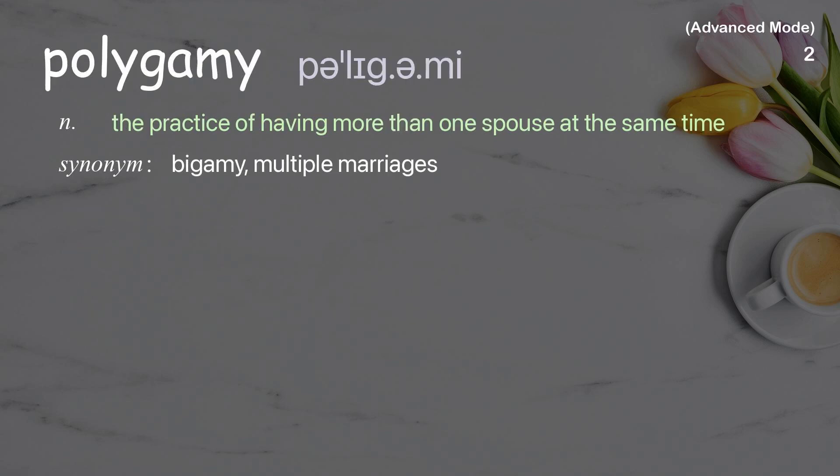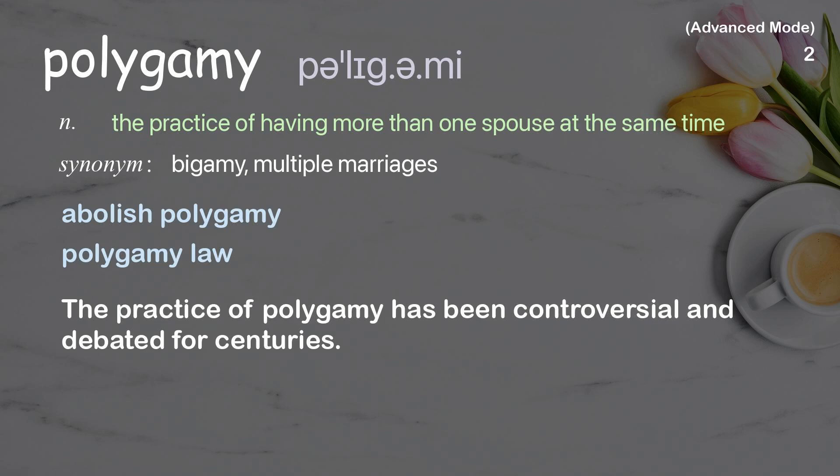Polygamy: The practice of having more than one spouse at the same time. Examples: Abolish polygamy. Polygamy law. The practice of polygamy has been controversial and debated for centuries.